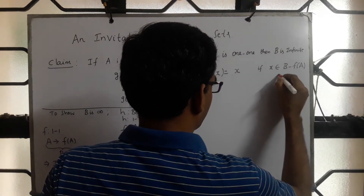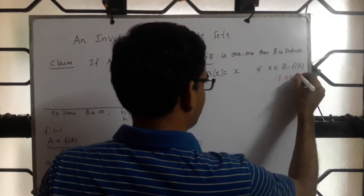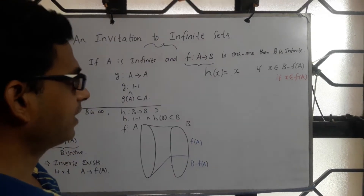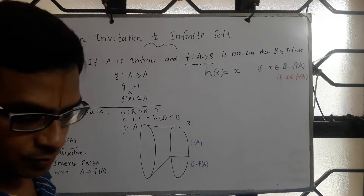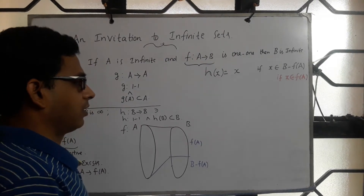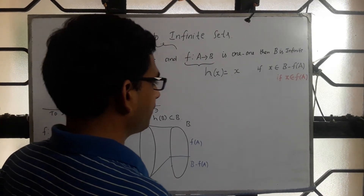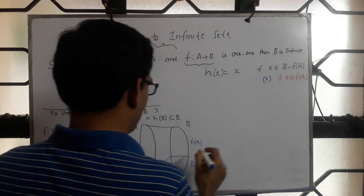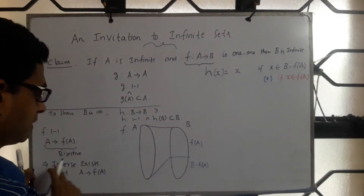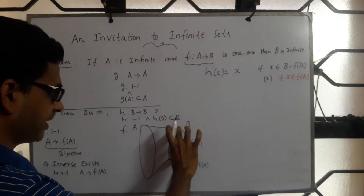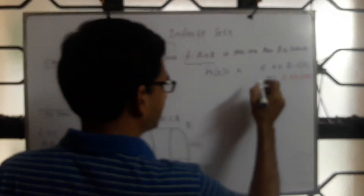Suppose x is coming from the f(A) part — how do we map this? We have observed that since f is 1-to-1, f from A to f(A) is bijective, so f⁻¹ exists. So for x in f(A), we take f⁻¹.